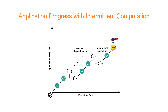Intermittent computation takes more execution time as it checkpoints intermediate application state to some non-volatile memory before power loss and restores the checkpointed state on power up. The size and frequency of checkpoints may vary from very frequent checkpoints in systems that use non-volatile majority gates (NVMGs), to continuous checkpointing in systems with persistent main memory, to just-in-time checkpointing solutions in mixed volatility systems.